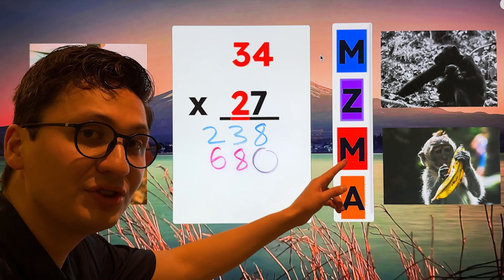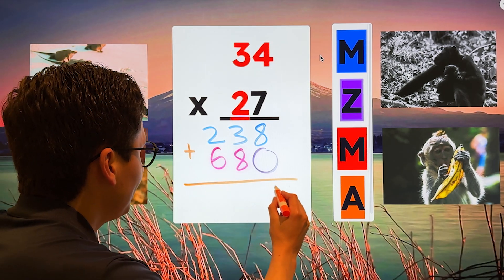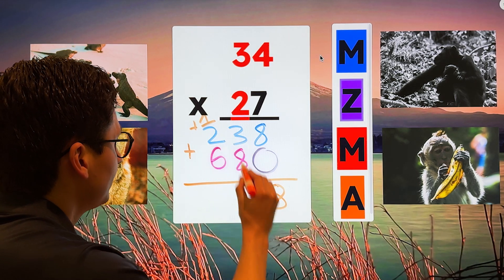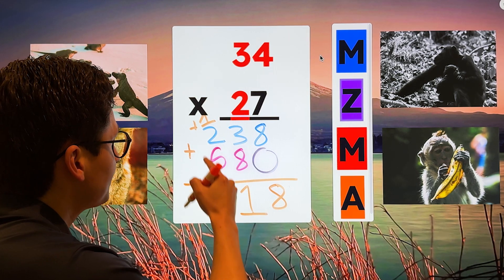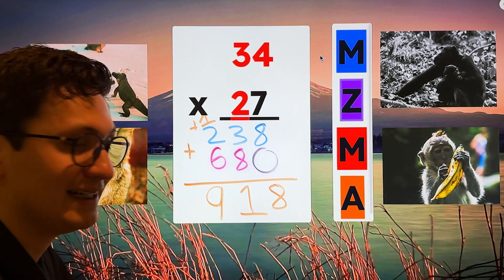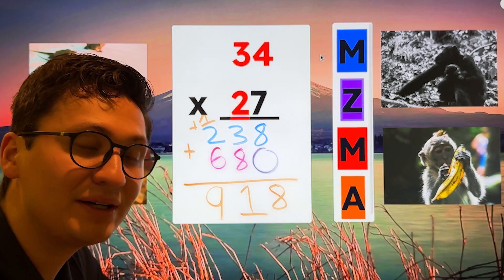We're done with our third step. And our last step is to add. Eight plus zero is eight. Eight plus three is 11. We regroup. Six plus two is eight plus one is nine. So 34 times 27 is 918.